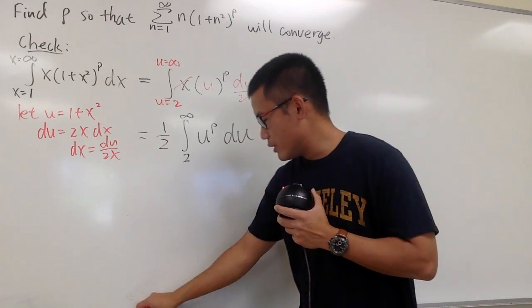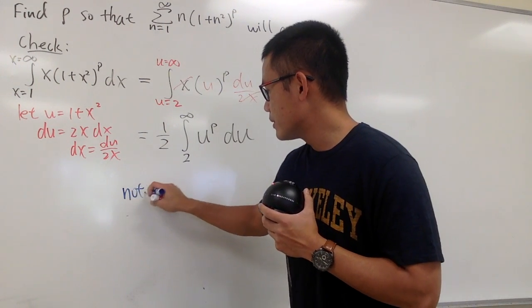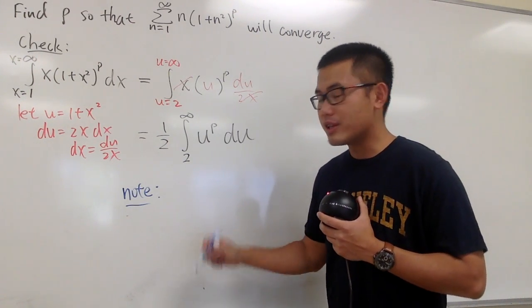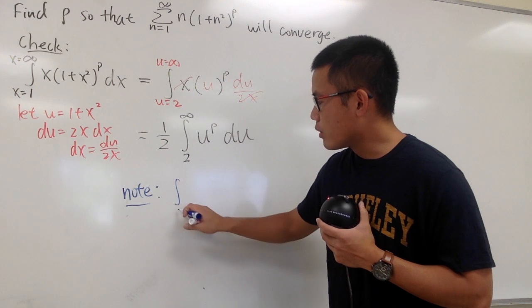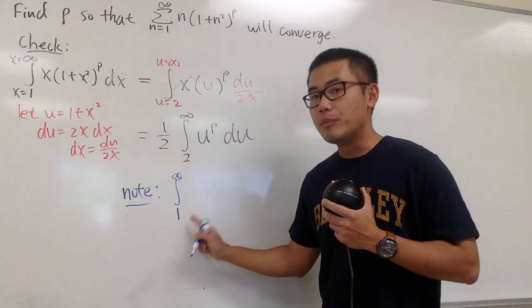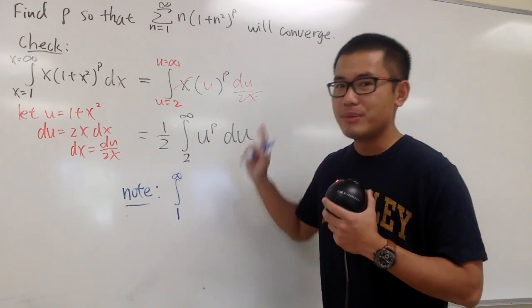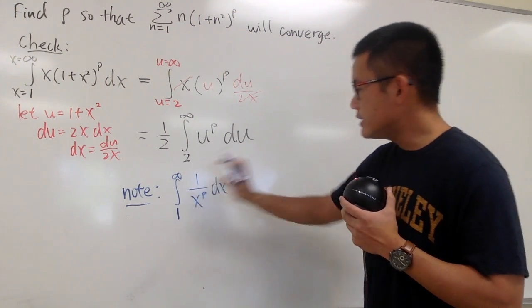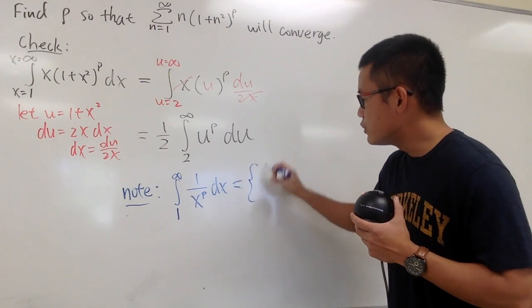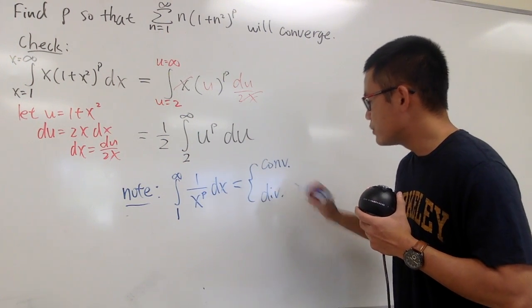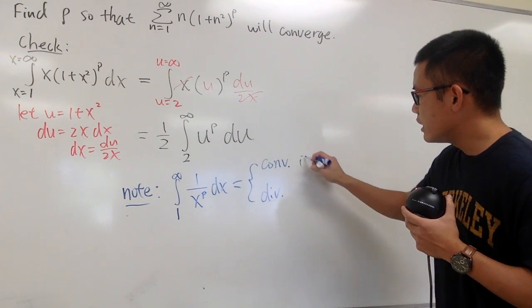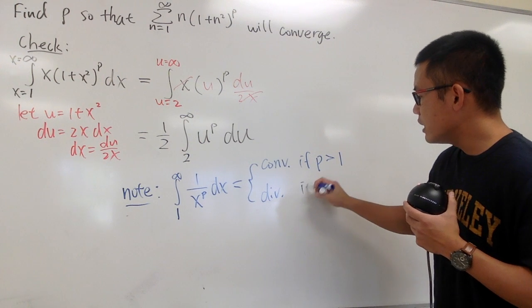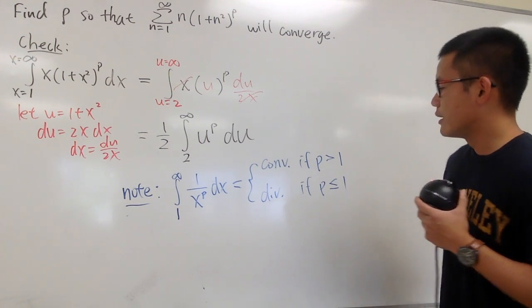Let me put a note in blue. We know that when we are in the improper integral section, there is a theorem that says, if you have the improper integral from 1 to infinity, 1 over x to this p's power dx. We know this improper integral either converges or diverges. This converges if p is greater than 1. This diverges if p is less than or equal to 1.